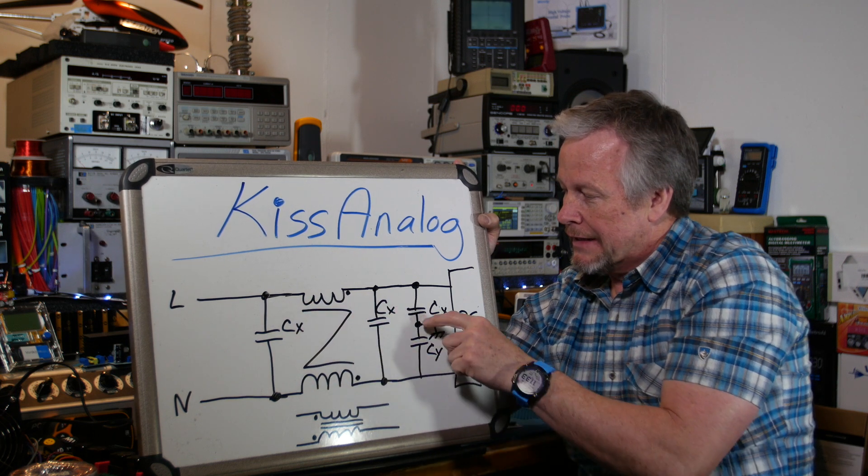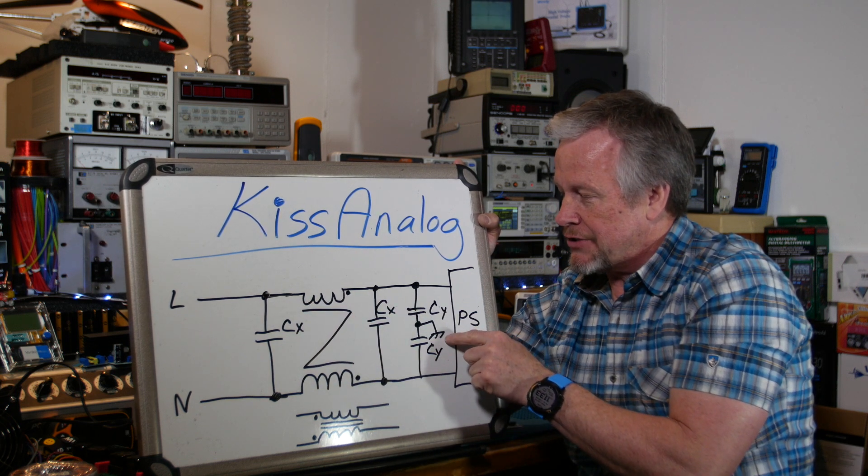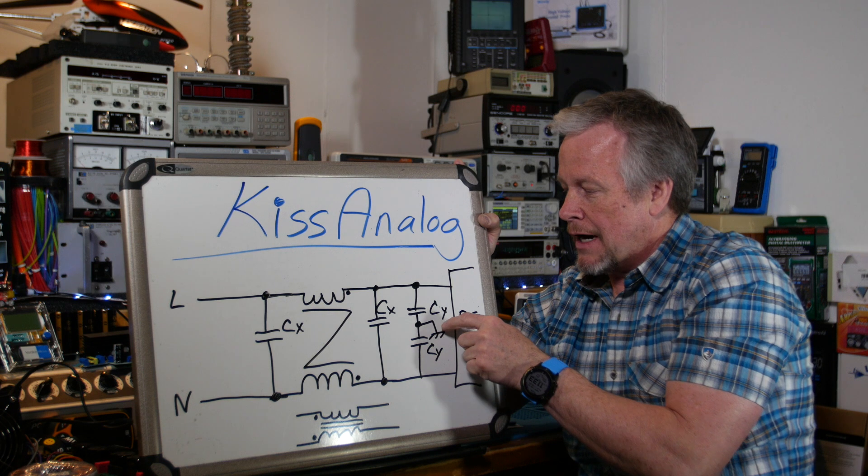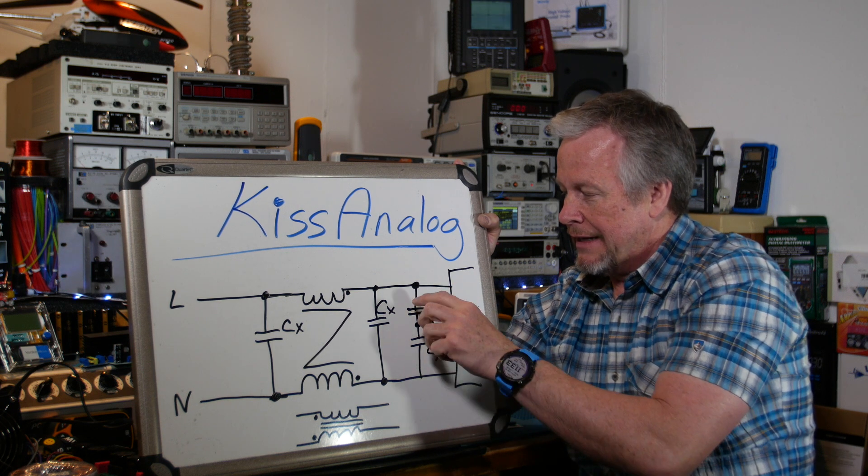So they're going to filter that normal mode stuff. These two guys are tied to your chassis so they're common to each line and they're going to filter your common mode stuff.